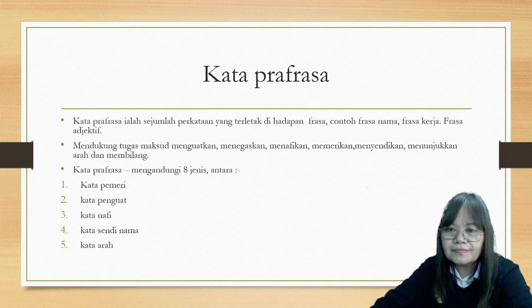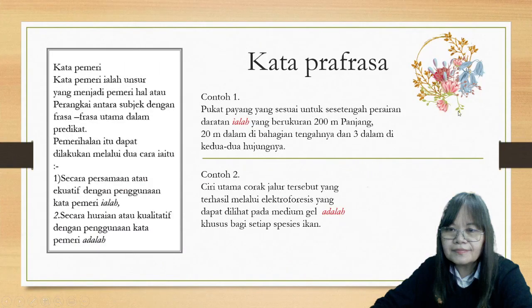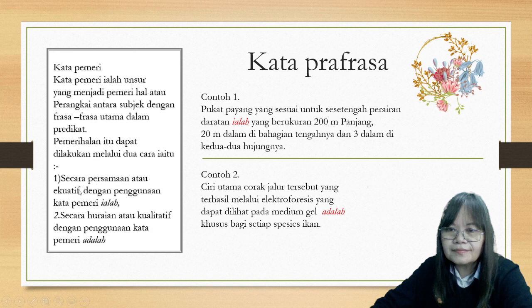Lima jenis kata prafrasa ialah: pertama kata pemeri, nombor dua kata penguat, tiga kata nafi, dan juga kata sendi nama dan kata arah. Kita pergi tengok kata pemeri. Kata pemeri ialah unsur yang menjadi pemerian atau perangkai antara subjek dengan frasa, iaitu frasa utama dalam predikat. Pemerian itu dapat dilakukan melalui dua cara. Pertama, secara bersamaan ataupun ekuatif dengan penggunaan kata pemeri 'ialah'. Anak murid kena ingat, ini ialah kata pemeri menggunakan perkataan 'ialah'.